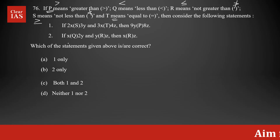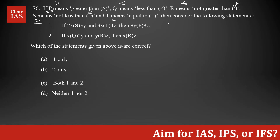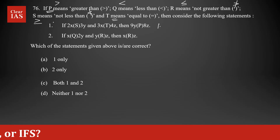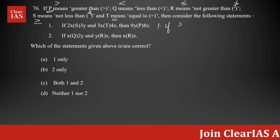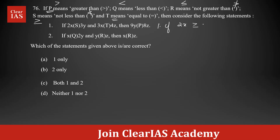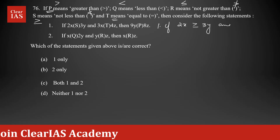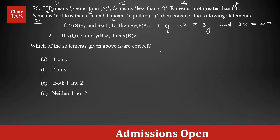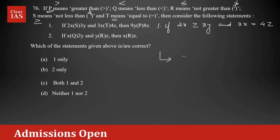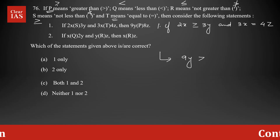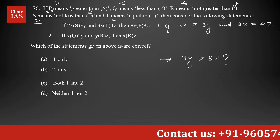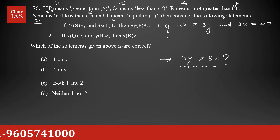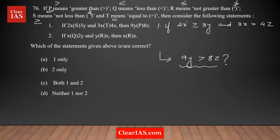We need to consider two statements and find which are correct. Statement 1 says: if 2x ≥ 3y (s means greater than or equal to) and 3x = 4z (t means equal to), then we need to check whether 9y > 8z (p means greater than). Let's cross-check whether this is true or not.